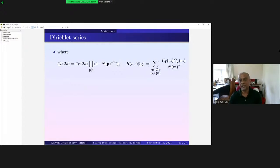And R(s, f×g) is simply this product, it's just a short form that we're writing: cf(m)cg(m) by nm to the power s. So we started with two primitive cusp forms and then we have written down this Rankin-Selberg convolution of f and g.